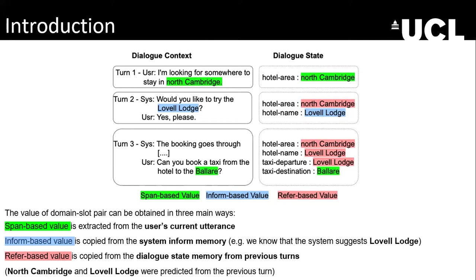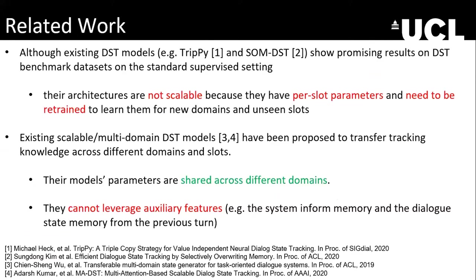The task is to correctly identify how these domain-slot value pairs can be obtained and their associated values. There are existing DST models, such as 3Pi and SOM-DST, which show promising results. However, their architectures are not scalable because they only have per-slot parameters, meaning they need to be retrained for new domains and slots. In a dialogue state tracking task used across many different domains, it is very difficult to have training data representing all possible domain-slot pairs.